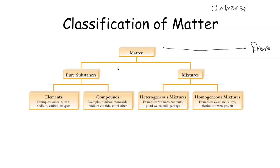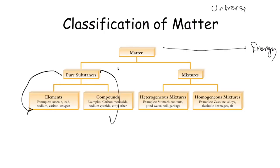Here is the classification of matter. Matter is either a pure substance or a mixture. A pure substance — like H₂O, O₂, or NaCl — has one unique identity and its own chemical formula. A mixture has two or more pure substances combined, like salt water (NaCl plus H₂O), or vinegar and water. Vinegar is acetic acid plus water and other chemicals — it has different components.